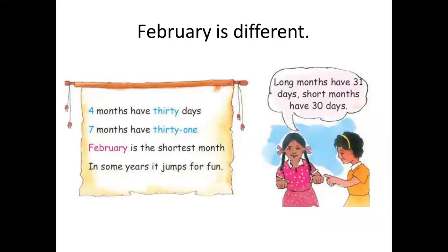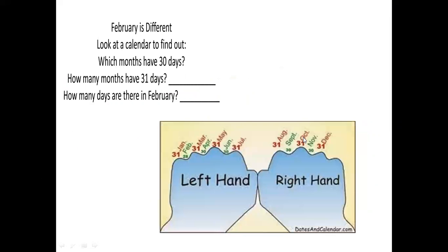Now, February is different. Four months have 30 days. Seven months have 31. February is the shortest month. In some years, it jumps for one. Long months have 31 days. Short months have 30 days. Now, let's see. February is different.